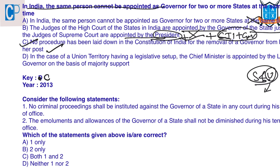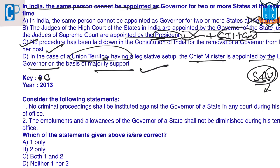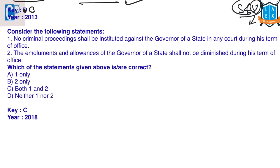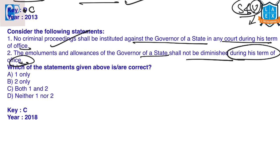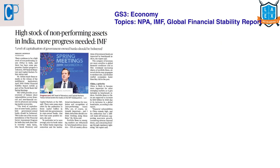In a union territory having a legislative setup, the Chief Minister is appointed by the Lieutenant Governor based on majority support — yes, that is correct. Another question: no criminal proceedings shall be instituted against the Governor during his term of office, and the emoluments and allowances of the Governor shall not be diminished during his term of office — both statements are correct. The answer is C — both 1 and 2.